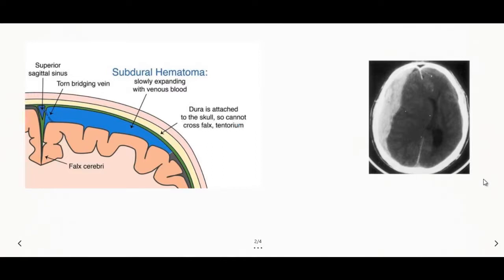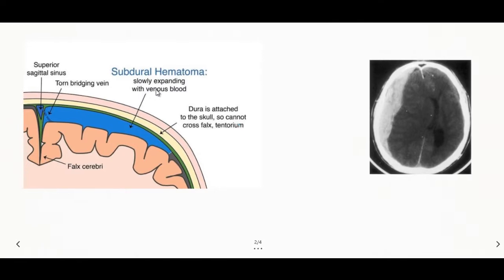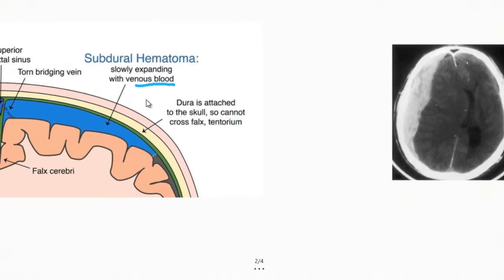Welcome again. We are talking about intracranial hemorrhages. In the last video we discussed epidural hematoma, and now we are going to discuss subdural hematoma. Subdural hematoma, in contrast to epidural hematoma, is more of venous blood, while epidural hematoma was usually due to arterial bleeding.